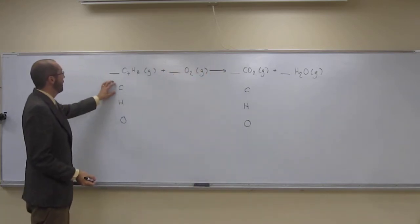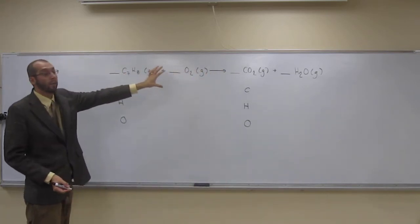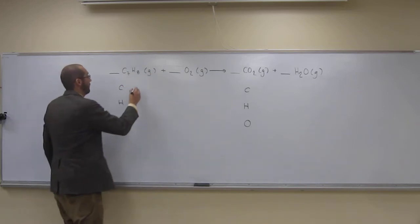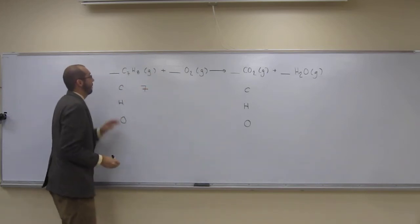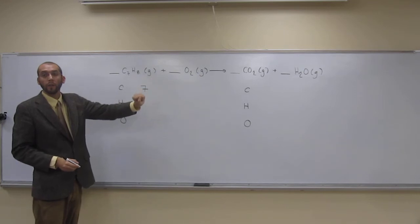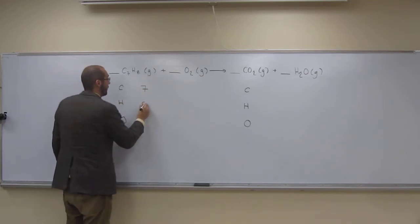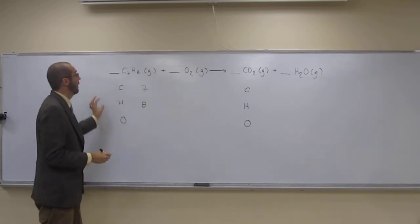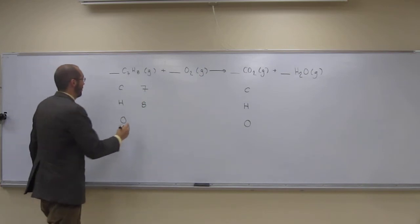Okay, so let's count. How many carbons do we have on this side of the reaction? Seven. How many hydrogens do we have over here? Eight. And just for fun, how many oxygens? Two.